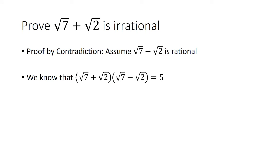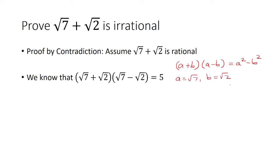Now let's consider this expression. We have the square root of 7 plus square root of 2, times the square root of 7 minus square root of 2. That's going to equal 5, because this is a case of difference of two squares: (a + b)(a − b) = a² − b². Here a is the square root of 7 and b is the square root of 2. So a² is 7, b² is 2, and subtracting gives 5.